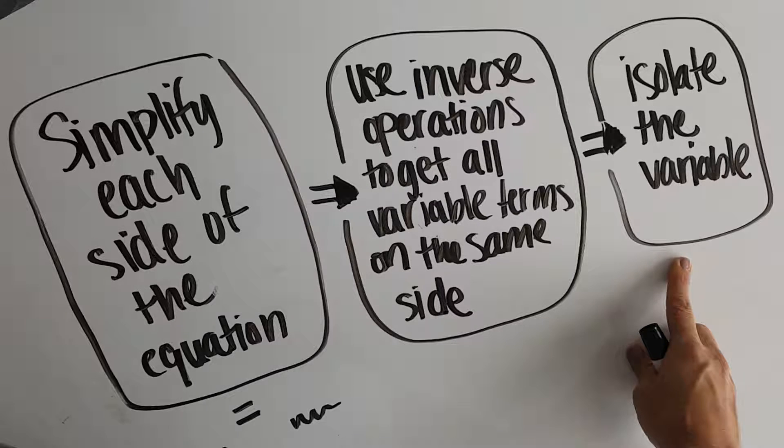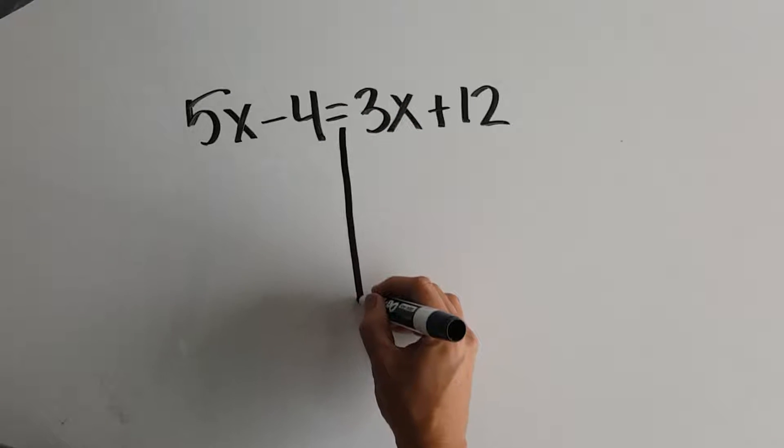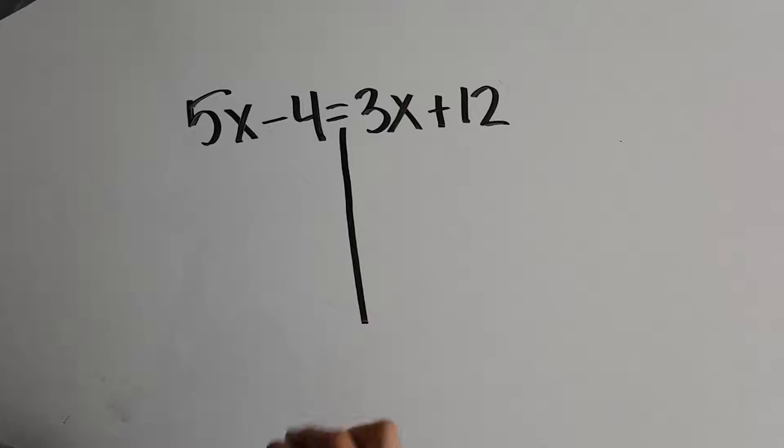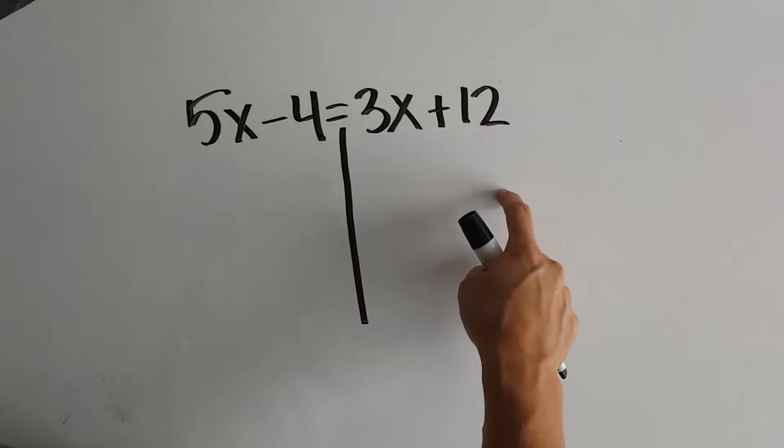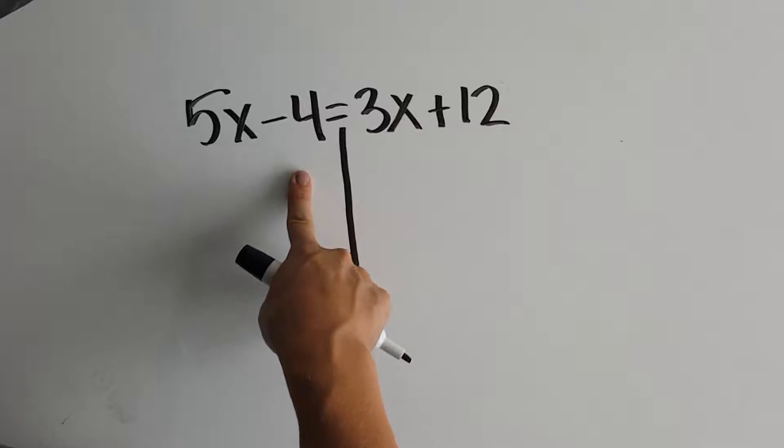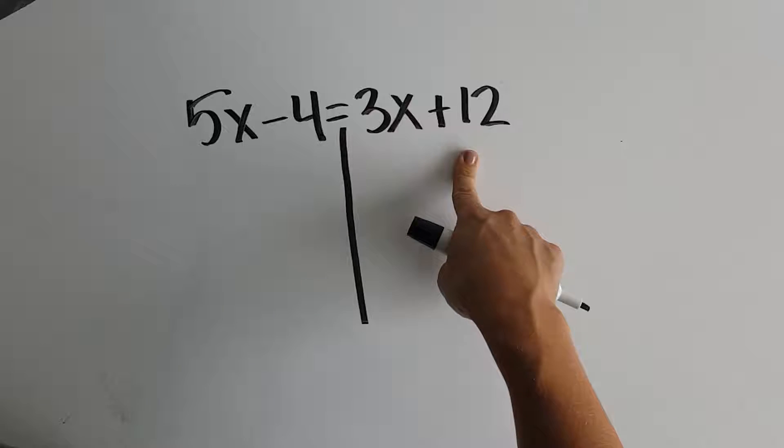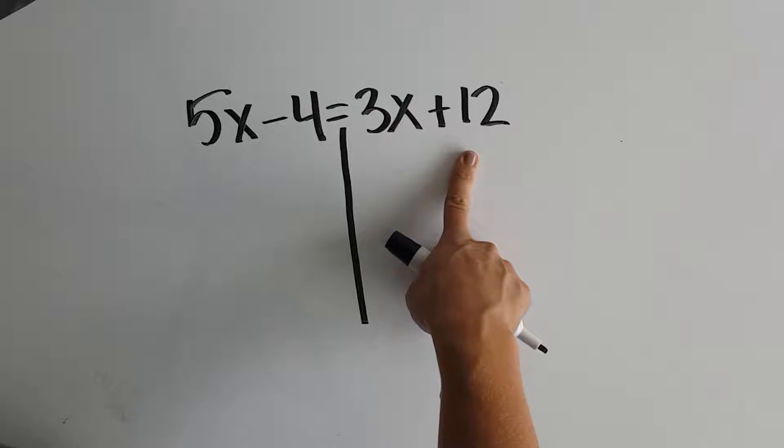In our first example, that equal sign splits our equation into two sides, the left side and the right side. On the left side, we want to see if we can simplify anything. Well, there's nothing we can distribute or combine, so let's check the right side. Nothing we can distribute or combine. So we get to move on to step two, which was get all of our variable terms on the same side.